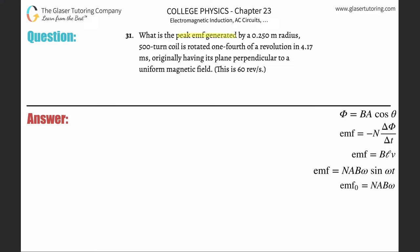Number 31: What is the peak EMF generated by a 0.25 meter radius, 500 turn coil rotated one-fourth of a revolution in 4.17 milliseconds, originally having its plane perpendicular to a uniform magnetic field?